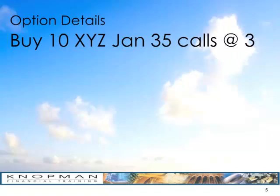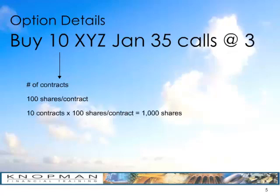We are buying call options — we own calls. This 10 is the number of contracts. A standard options contract represents 100 shares of stock. So this position represents 10 contracts times 100 shares, for a total of 1,000 shares of stock.